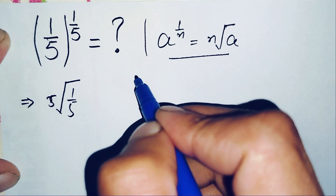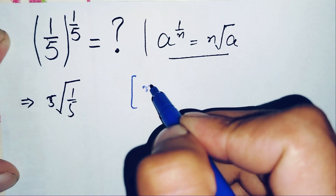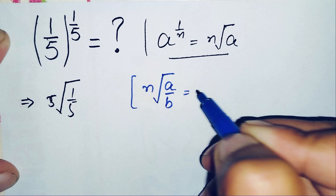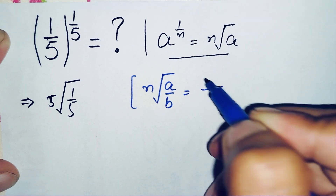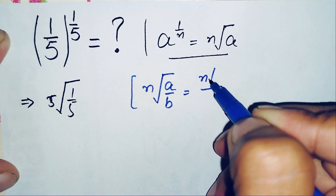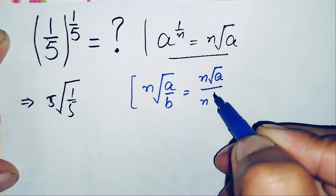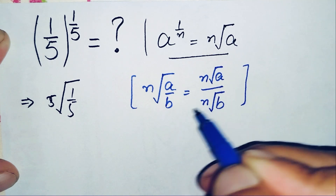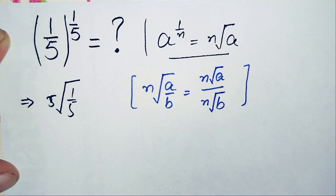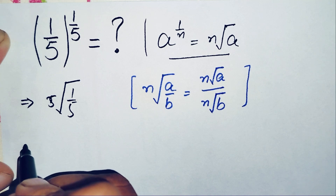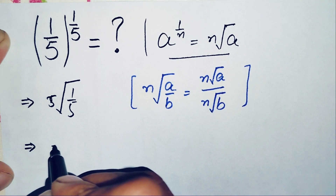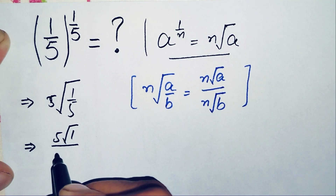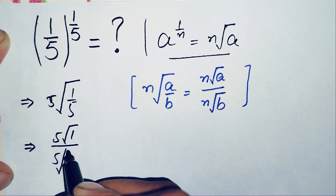We will use the result that the nth root of a divided by b equals the nth root of the numerator a divided by the nth root of the denominator b. Using this result, the equation becomes the fifth root of 1 divided by the fifth root of 5.